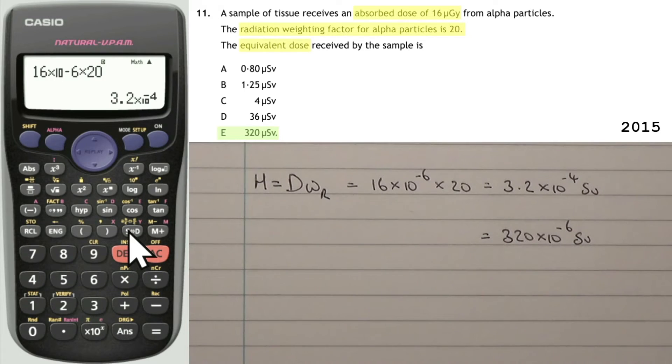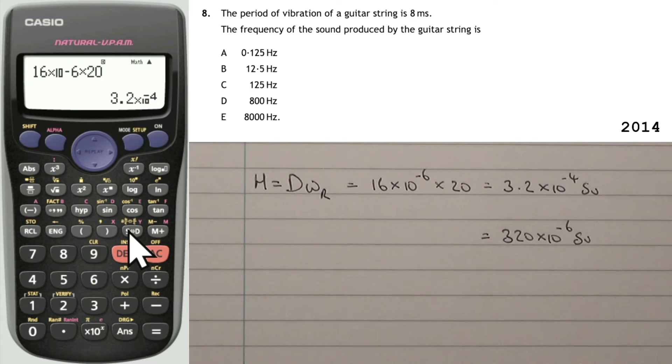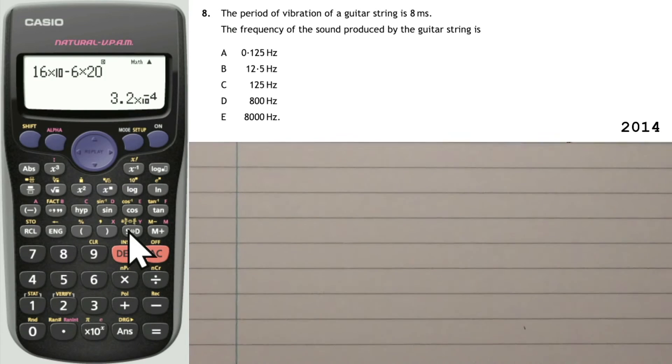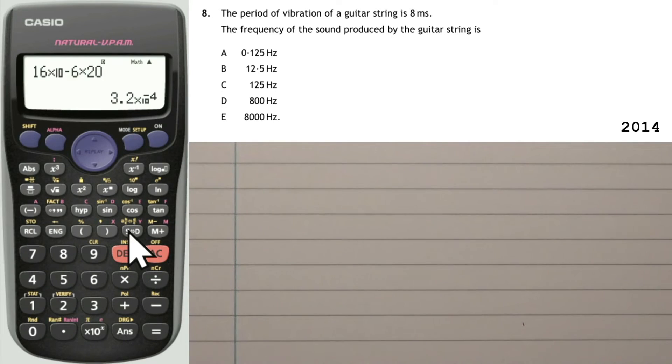Next question. This one says the period of vibration of a guitar string is 8 milliseconds. Again, there's another prefix. And the frequency of the sound produced by the guitar string is, this should be fairly easy, this one. There's only two terms which are mentioned. First of all, it mentions period, and that's 8 milliseconds. Milli is times 10 to the minus 3, by the way. And second of all, we're calculating frequency. So find an equation which has period and frequency in it. Pause now, and then you can start again.